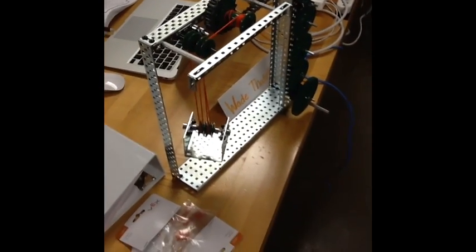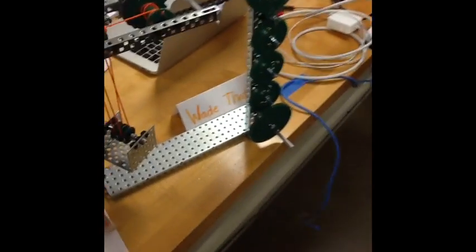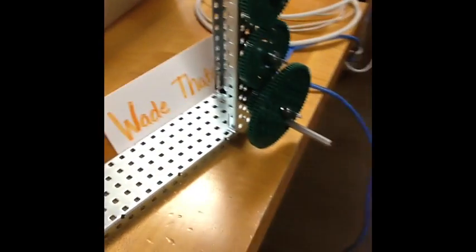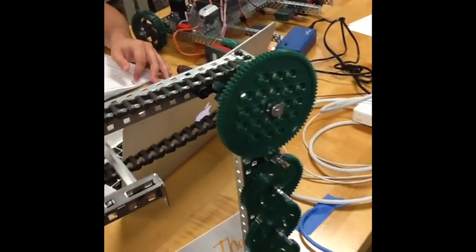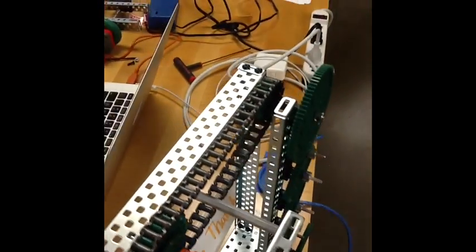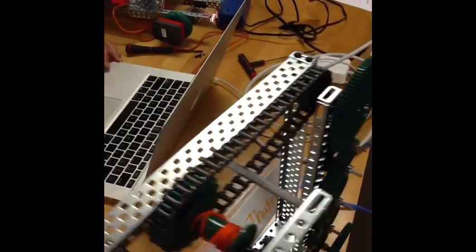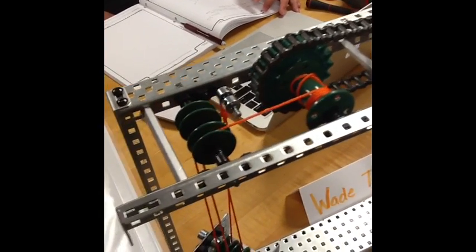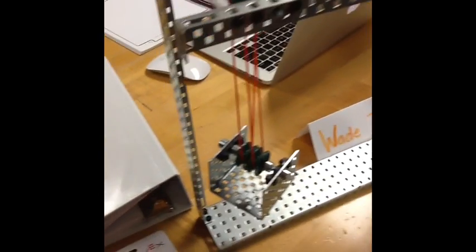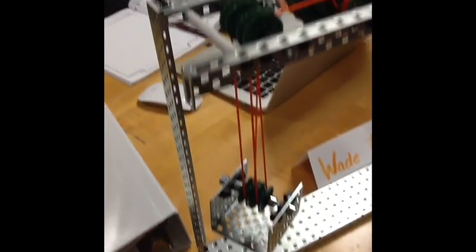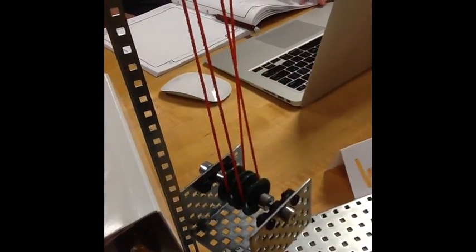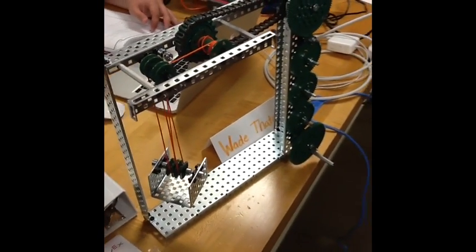Alright, compound machine number one. Got a wheel and axle followed by gear train to another wheel and axle here at the top, chain and sprocket, wheel and axle there, down to our block and tackle pulley system with a mechanical advantage of four. And let's see it work.